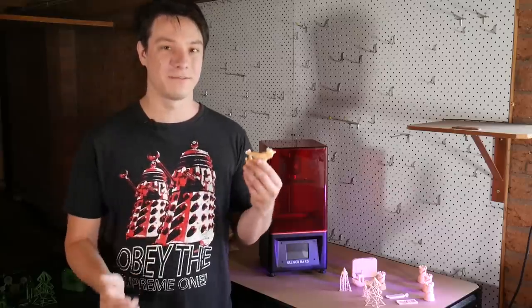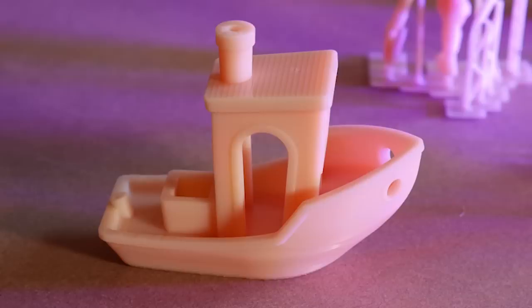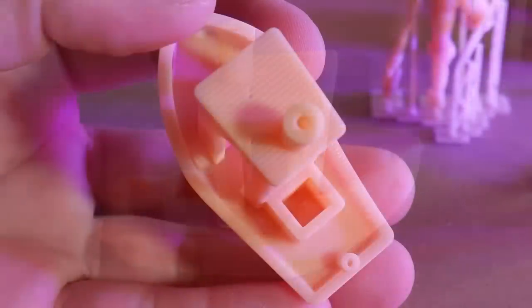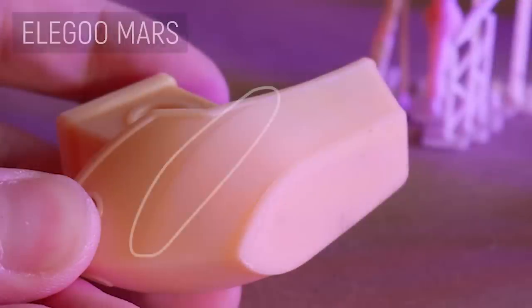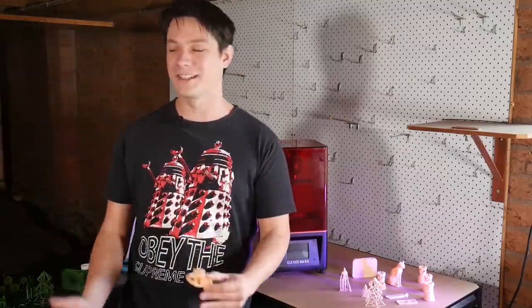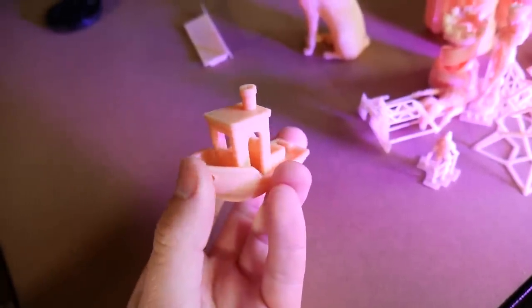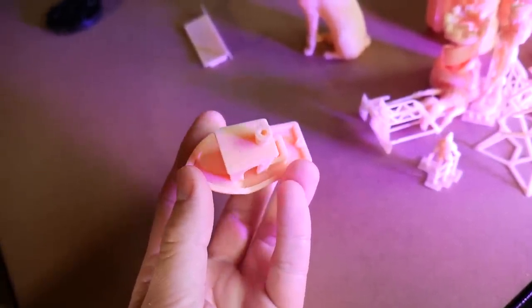Even 100 micron layer prints look really good, with this benchy coming out quite nice with just a few imperfections. There is a line along the hull that looks strange but I used the same file on the Epax and it has the same artifacts, so I think that's the file not the printer itself. It's one of the cleanest 100 micron benchys I've ever seen.